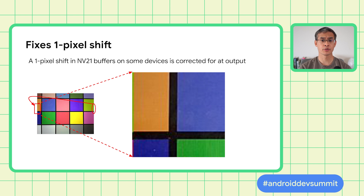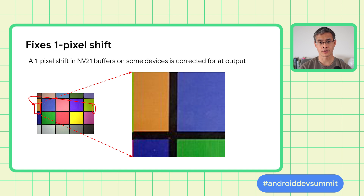YUV conversion also fixes a 1-pixel shift issue present on some devices. On those devices, the YUV output is barrel-shifted by 1 pixel, resulting in the rightmost column of data appearing at the left edge of the image. The YUV to RGB conversion fixes this on both YUV and RGB outputs on any devices where this is known to happen. CameraX will continue to apply this fix to more devices if necessary.